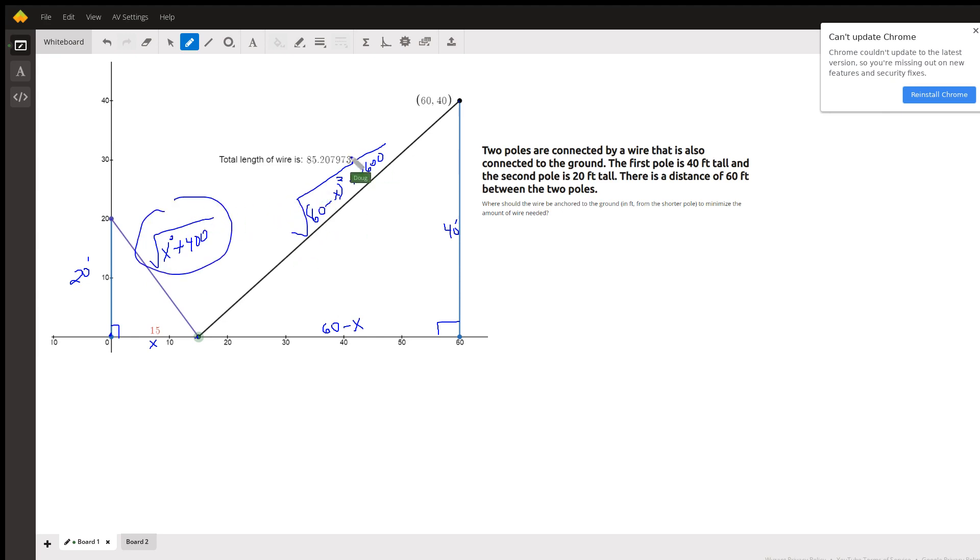If we add these two together, we've got a formula for the length of the wire depending on how far this anchor point is from the short pole. Okay, and if I share my screen just so you can see what's happening.